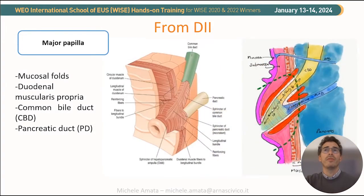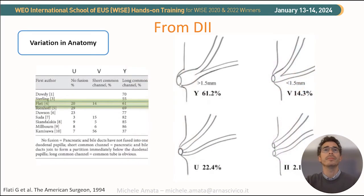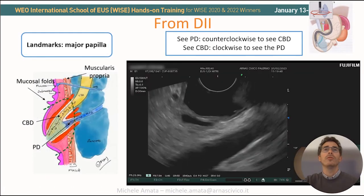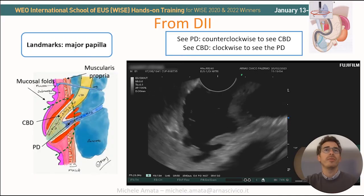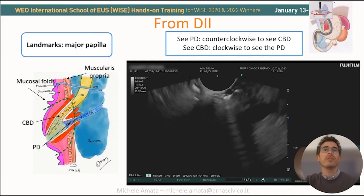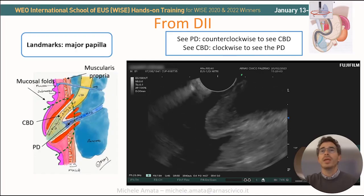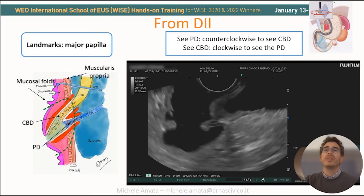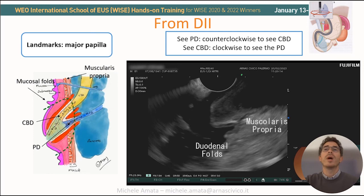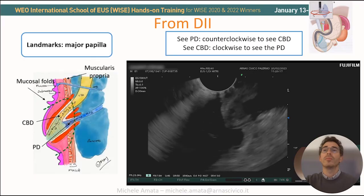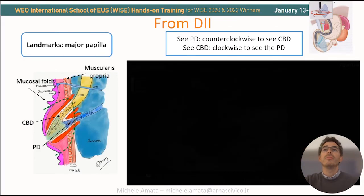From the second portion of the duodenum, we can study the major papilla in very detailed fashion, looking for landmarks: the mucosal folds, the duodenal muscularis propria, the CBD, and the MPD. To better evaluate the papilla, we use the balloon and inject saline solution inside the lumen to distend the duodenal folds and aspirate the remaining air. We need to use very soft clockwise and counterclockwise movements. In this case, we see a papillary lesion with an enlarged aspect obstructing the common bile duct and the main pancreatic duct. Moving counterclockwise, we see the CBD; returning clockwise, we are back to the MPD. This papillary lesion did not extend beyond the muscularis propria.